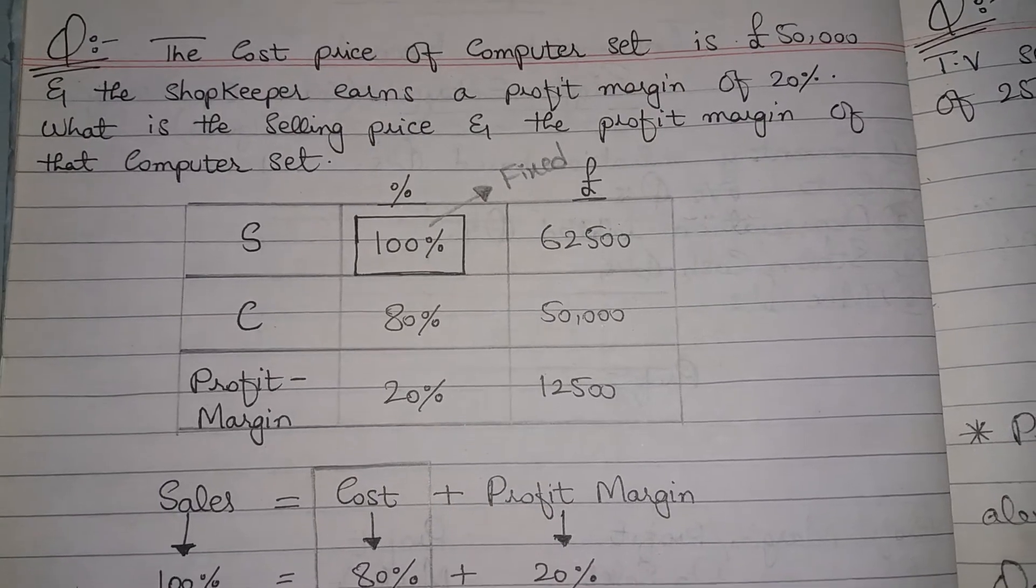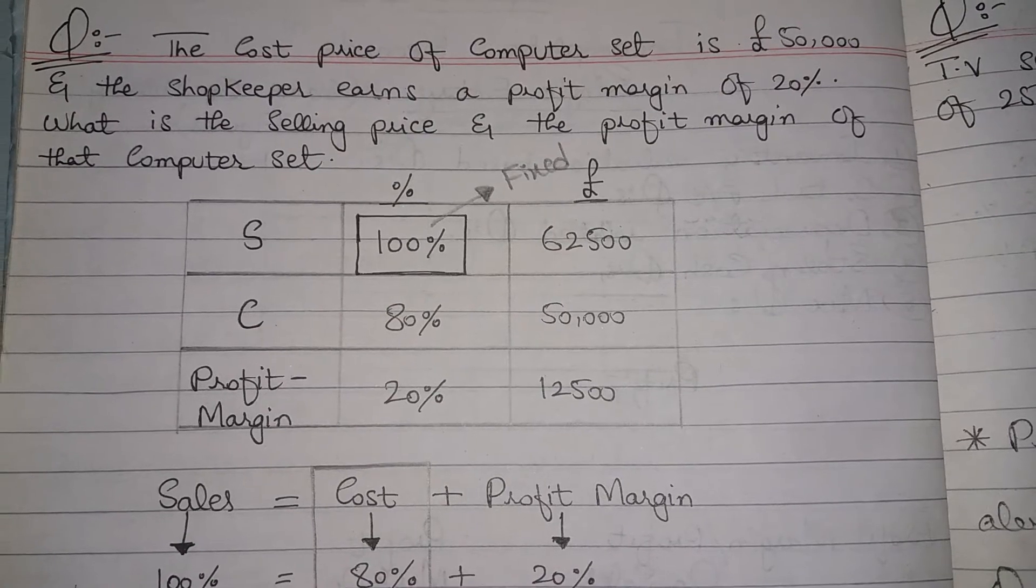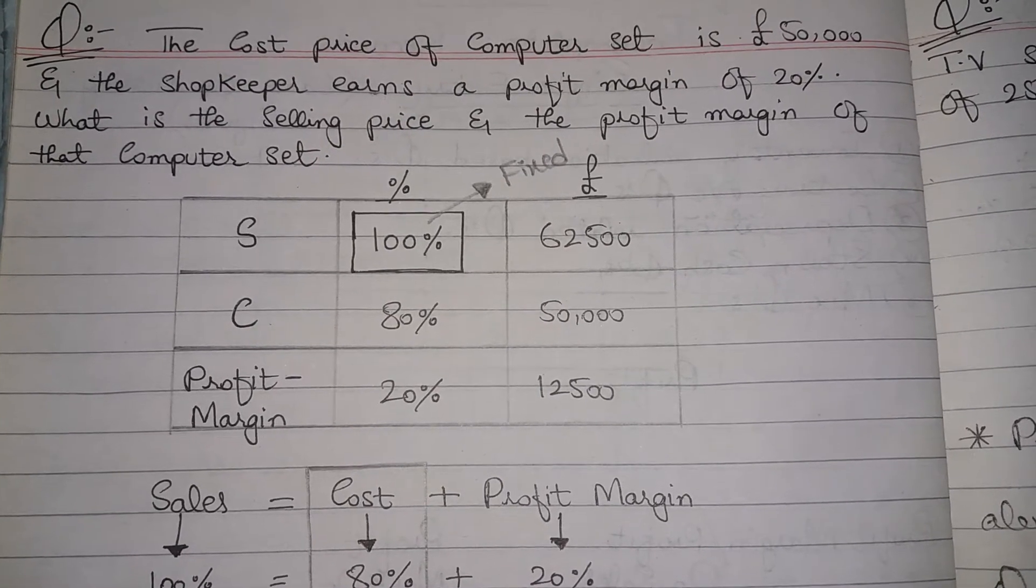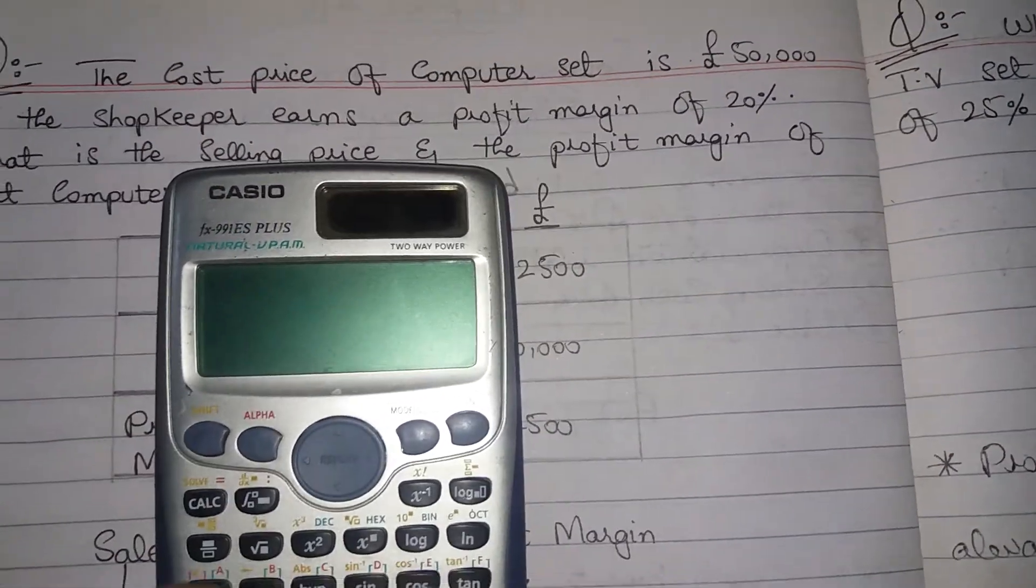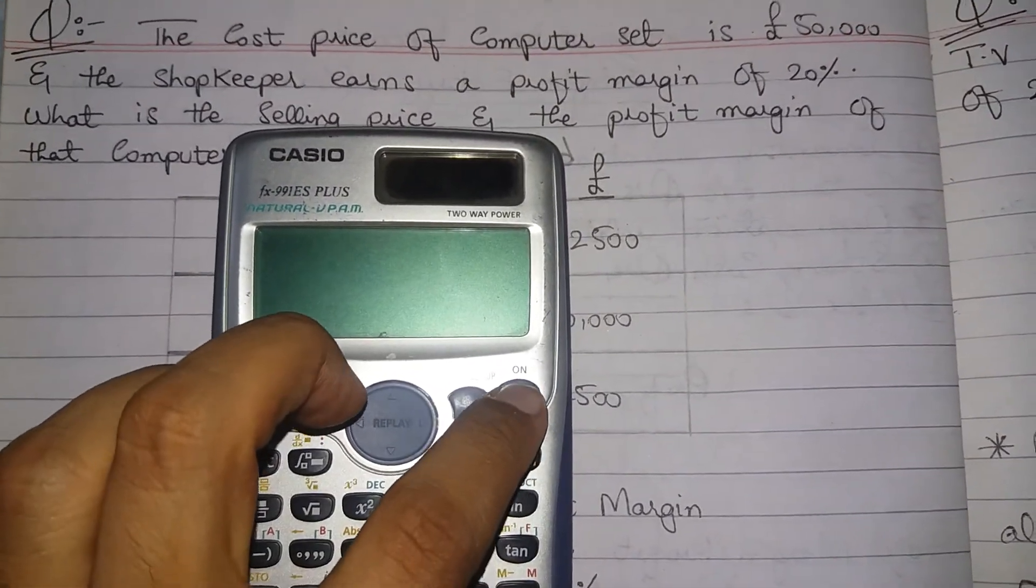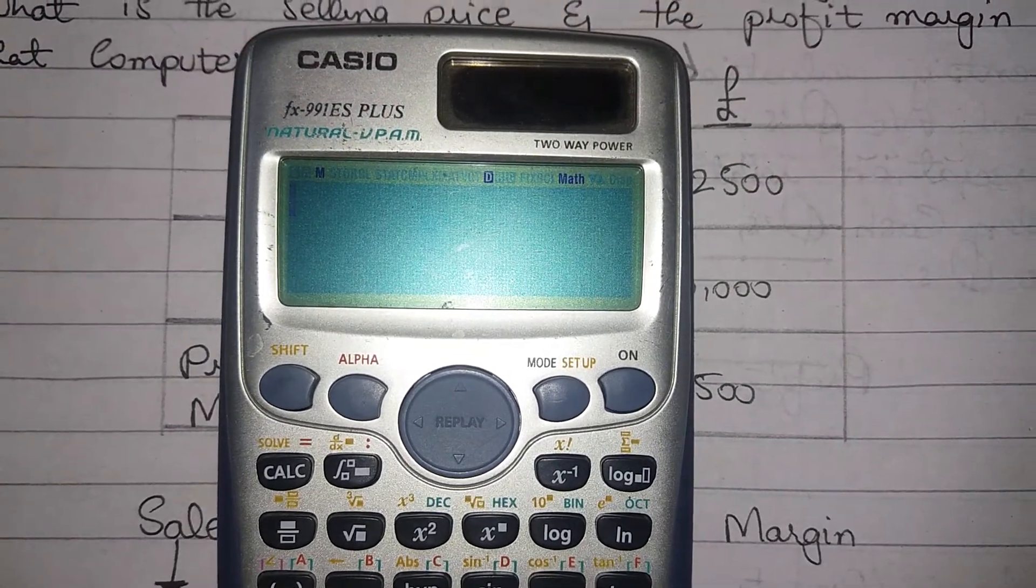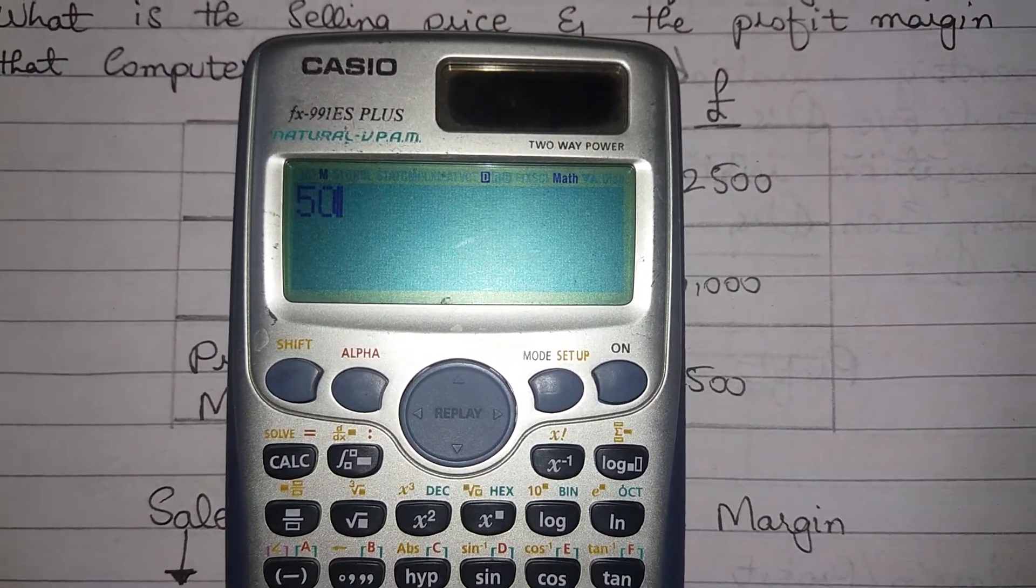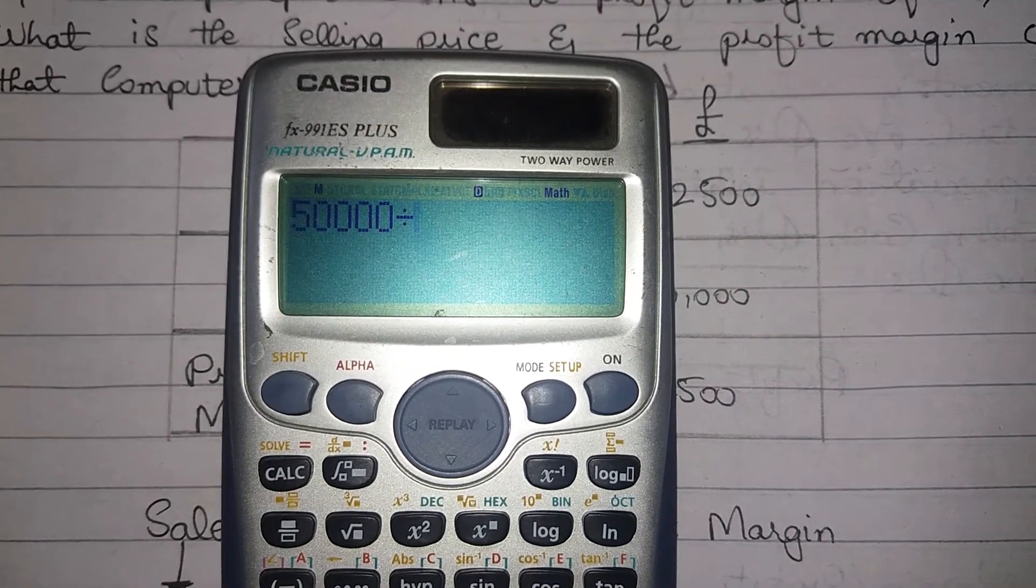So as you know, 50,000 is already given. So 50,000 should be divided like this. As you can see in the calculator, 50,000 was our cost. Divide 50,000 with this percentage, that was 80%.